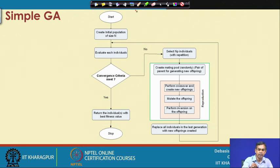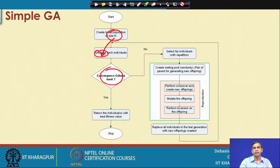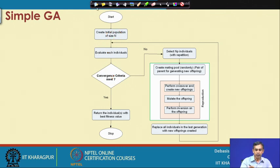Once the population size is decided and the initial population of random solutions is created, the next task in simple GA is to evaluate each individual — called fitness evaluation. For each individual solution in the current population, the evaluate operator calculates the fitness value. After evaluation, the algorithm checks the convergence criteria: if any individual has the highest possible fitness value, we satisfy convergence and stop. If convergence criteria is satisfied, we return the individual with the best fitness value as the solution.